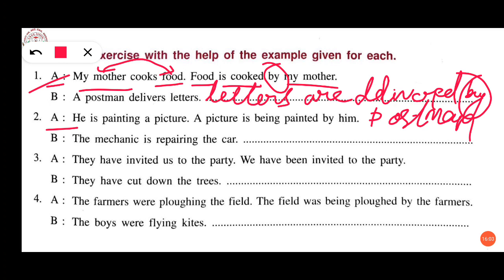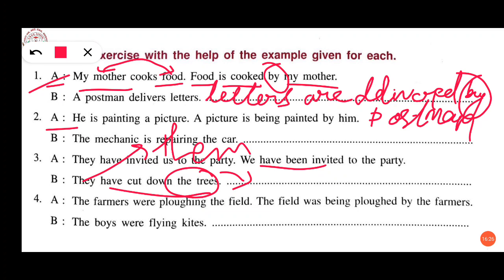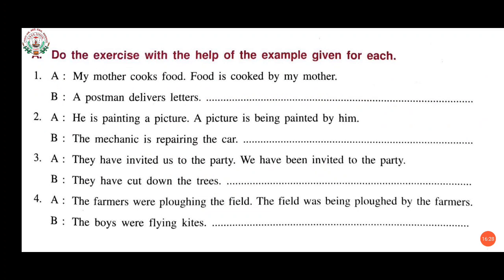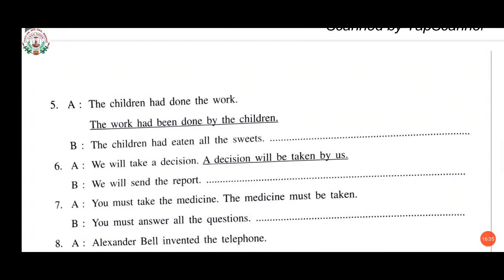Number 3: 'They have invited us to the party' becomes 'We have been invited to the party.' We use 'have been' here. Similarly: 'They have cut down the trees' becomes 'The trees have been cut down by them.' 'They' changes to 'them.'